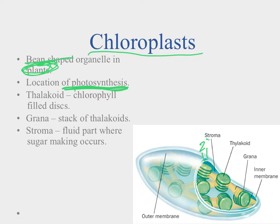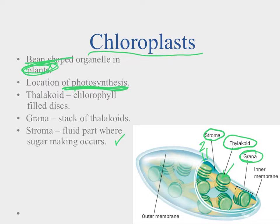Inside of that we find the stroma, and the stroma is this fluid part where the sugar-making happens. We have these thylakoid discs here, and this is where we find the chlorophyll. Chlorophyll is a pigment very important for photosynthesis. And if we stack these thylakoid discs on top of each other, we end up with what we call the grana.